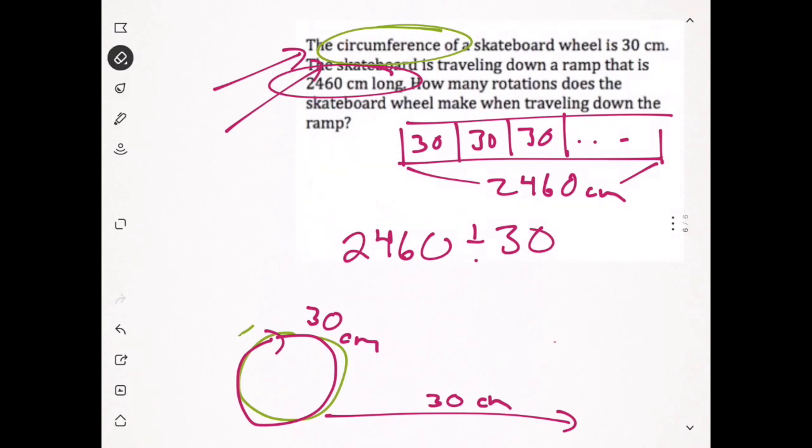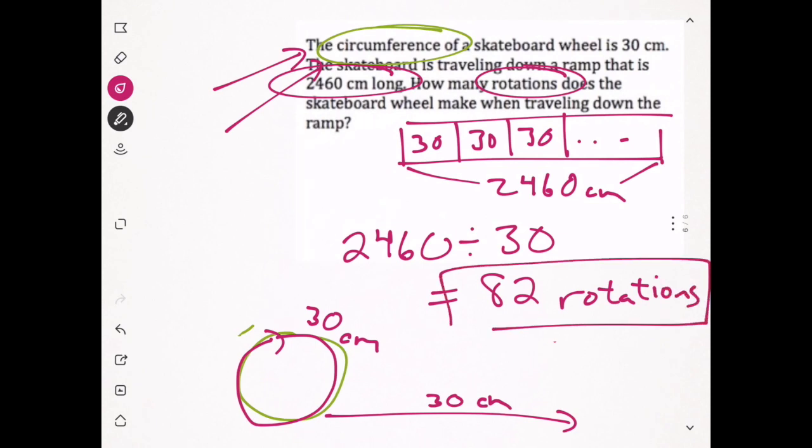We're going to divide 2460 by 30, and that gives us 82. But 82 what? The question is how many rotations, so 82 rotations. This was just a simple division problem because we know the circumference and we know how far it's going. All we had to do was divide.